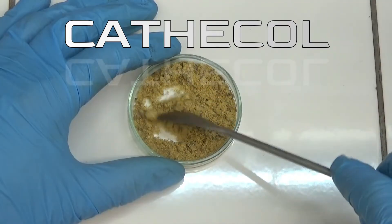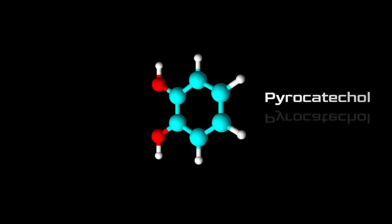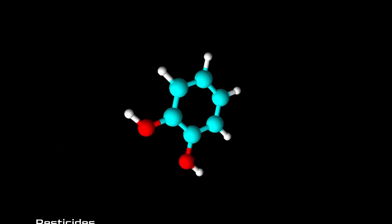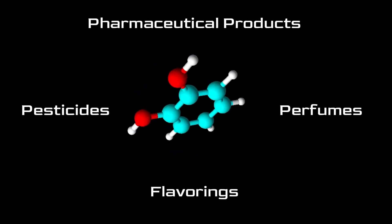In this video we prepare catechol. Catechol, also called pyrocatechol or 1,2-dihydroxybenzene, is used in the chemical industry to obtain pesticides, perfumes, pharmaceutical products and flavorings such as vanilla.